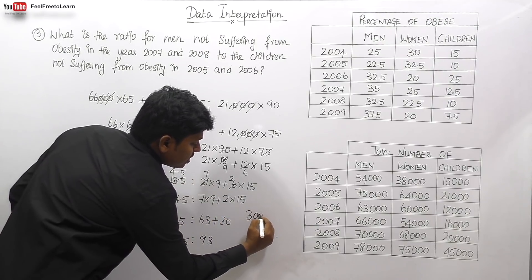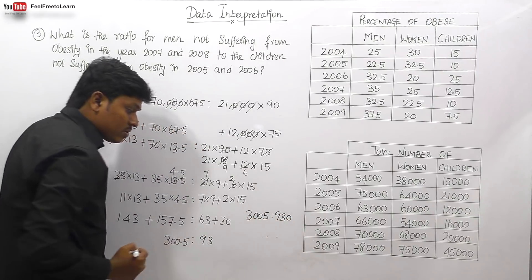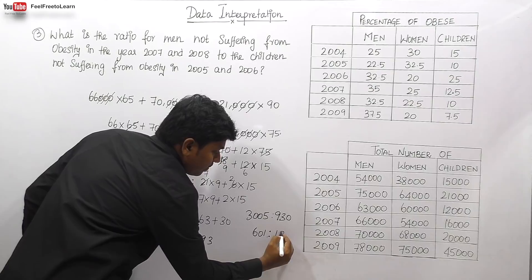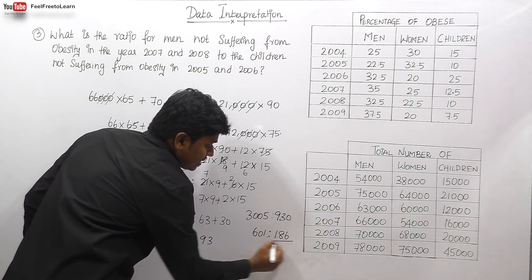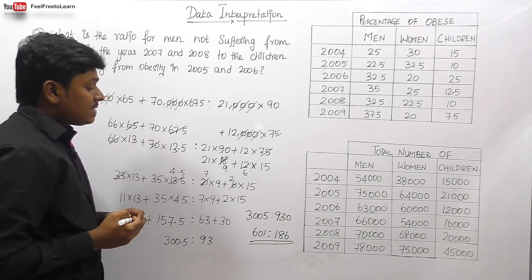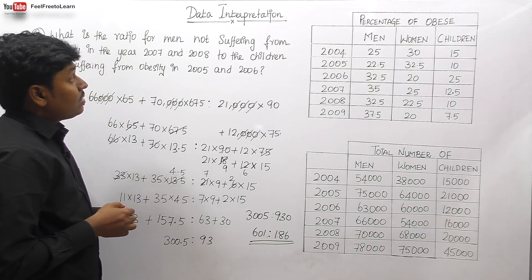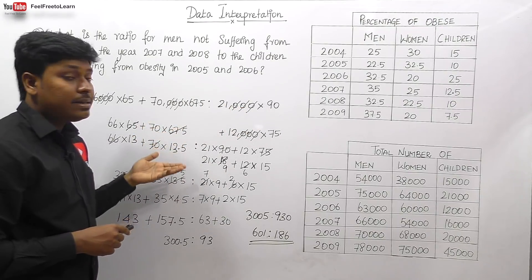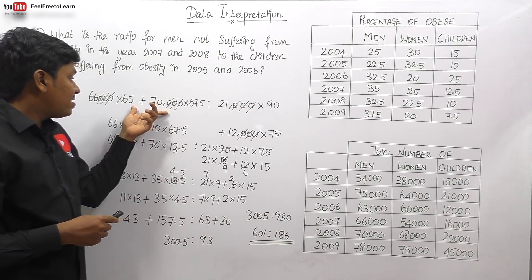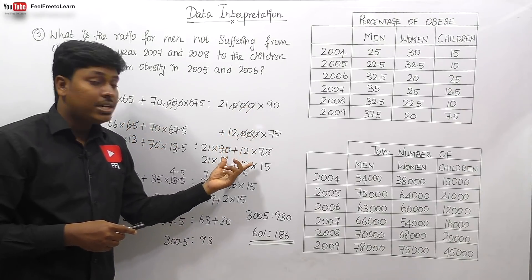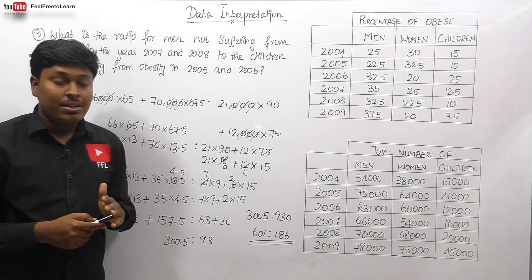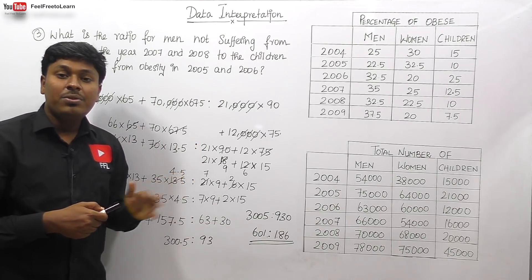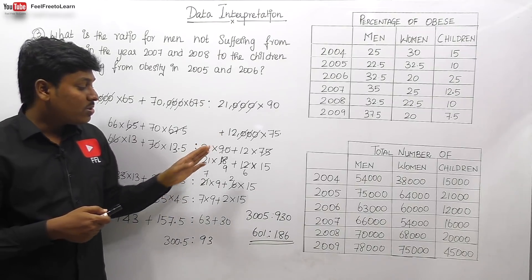So we have 300.5 to 93, which can be written as 3005 to 930. Dividing both by 5 gives 601 to 186. So the final answer for question three is 601 is to 186. If you use a normal traditional method, this would take more than two minutes. With practice — more than 10 similar questions — you can solve it within one minute.